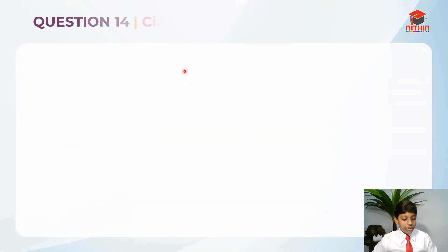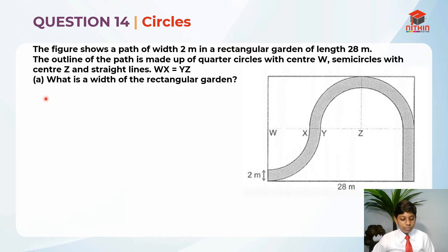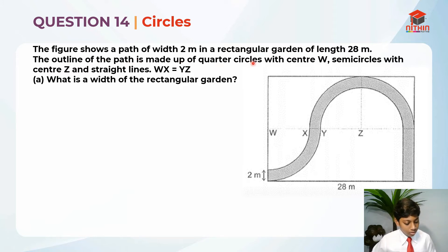Question 14 is testing us on the concept of circles. I'll be going through part A right now and later in this video I'll go through part B — so there are two parts, part A and B. Let's read the question first. The figure shows a path of width 2 meters — width means breadth — in a rectangular garden of length 28 meters. The outline of the path is made up of quarter circles with center W, semicircles with center Z, and straight lines.